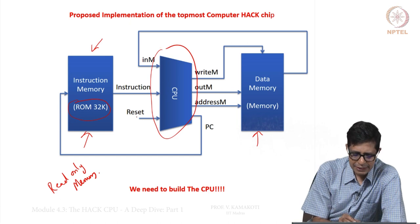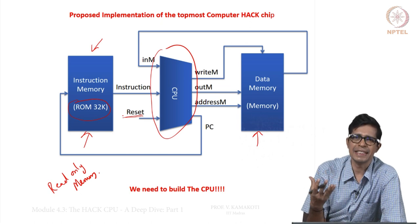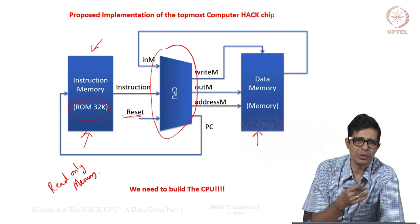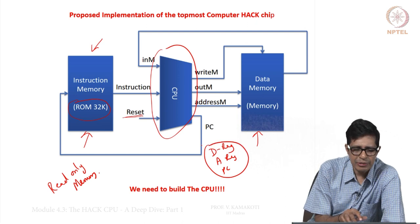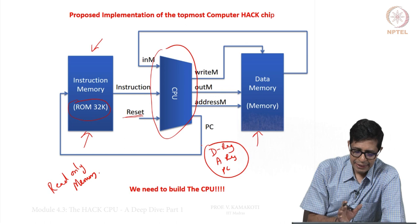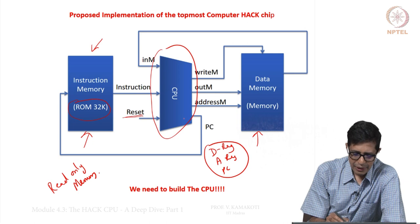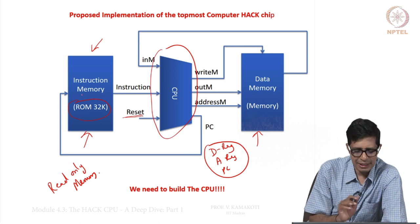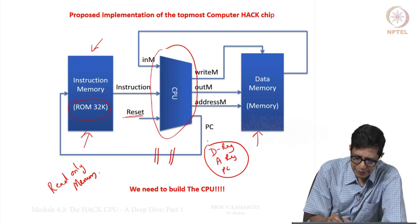There is a reset which is given externally to the CPU. The reset will go and reset the program counter, the D register, and the A register. There are three storage elements: a D register, an A register, and the program counter — these three are reset when you give the reset pulse. The CPU will take instructions one by one from the instruction memory; which instruction it takes is the one pointed to by the program counter.